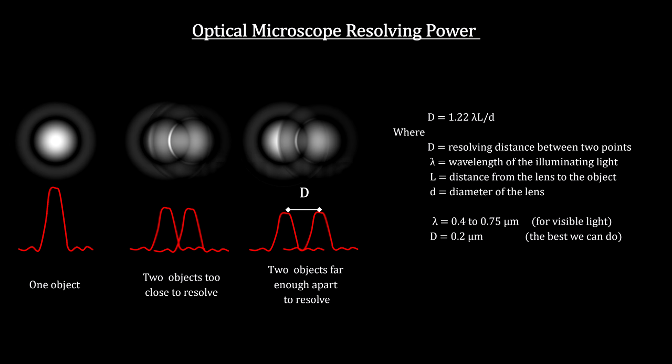Now look what happens if we detect which slit the photon went through. Here, a detector registers yes if the photon went through the upper slit and no if it didn't.